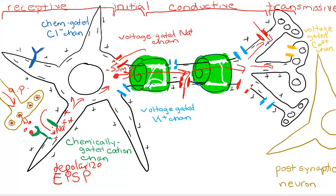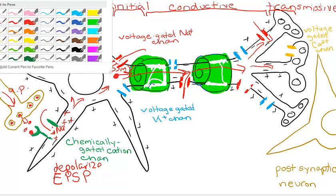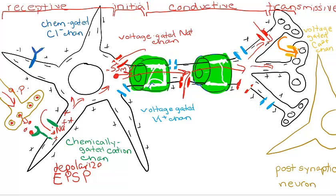Once this action potential reaches our synaptic knobs, we open up the voltage-gated calcium channels. Opening those channels allows calcium to enter our cell, and calcium is going to interact with the synaptic vesicles filled with neurotransmitter. The neurotransmitter will be released into the synaptic cleft, where it's going to bind with receptors located on the receptive segment of the post-synaptic neuron.